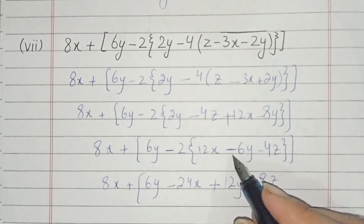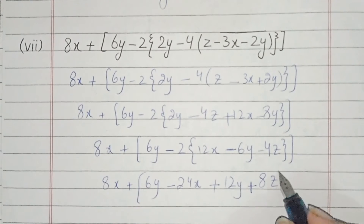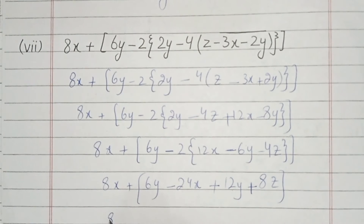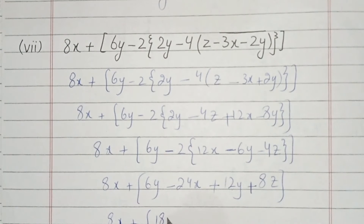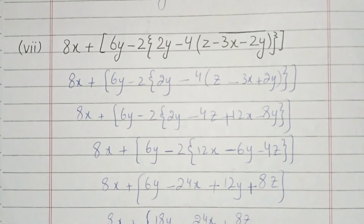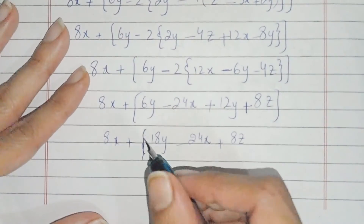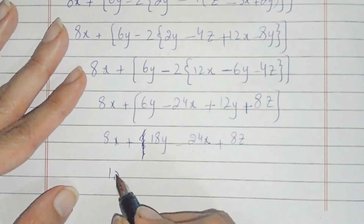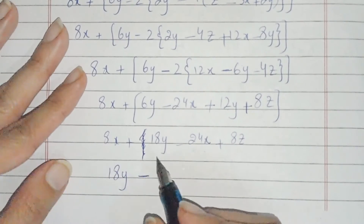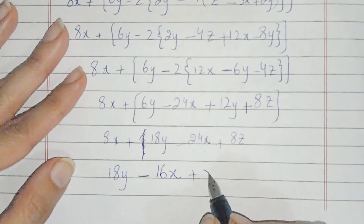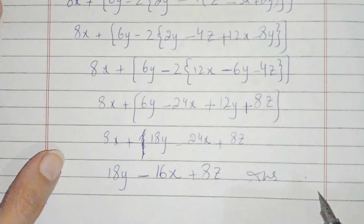Minus minus is positive, this is positive, and this is minus. Now we collect like terms: 12x and 6 gives 18, and 8x — we get 18y minus 24x plus 8z. Simplifying the bracket we get 16x minus 16x plus 8z. And this is the answer of the 7th part.